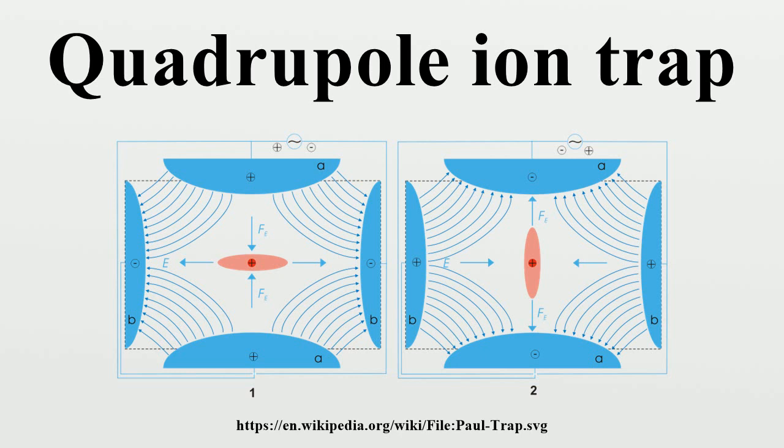The Paul trap is designed to create a saddle-shaped field to trap a charged ion, but with a quadrupole, this saddle-shaped electric field cannot be rotated about an ion in the center. It can only flip the field up and down. For this reason, the motions of a single ion in the trap are described by Mathieu equations, which can only be solved numerically by computer simulations.